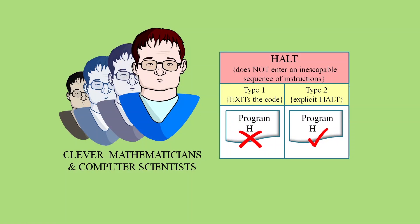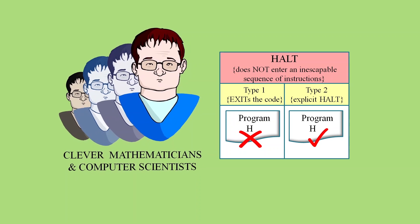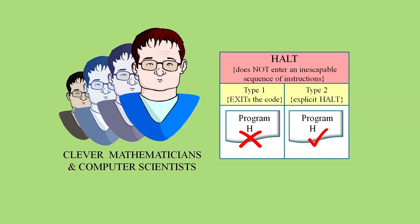But of course, Tara must be wrong. Because if she weren't, then it would mean that for the best part of a century, the world's cleverest mathematicians and computer scientists for that matter have failed to spot the simple issue that there can be two types of halt.